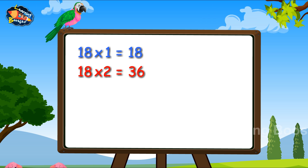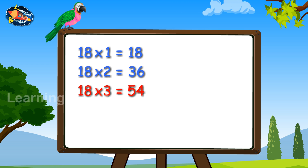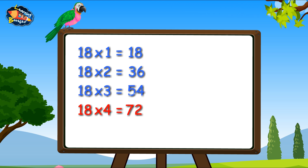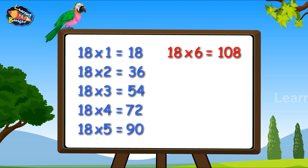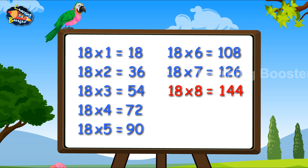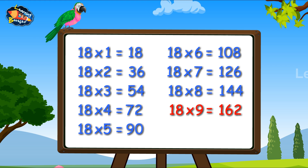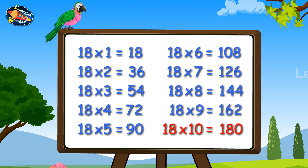18-2s are 36. 18-3s are 54. 18-4s are 72. 18-5s are 90. 18-6s are 108. 18-7s are 126. 18-8s are 144. 18-9s are 162. 18-10s are 180.